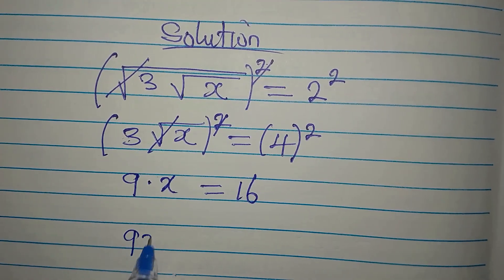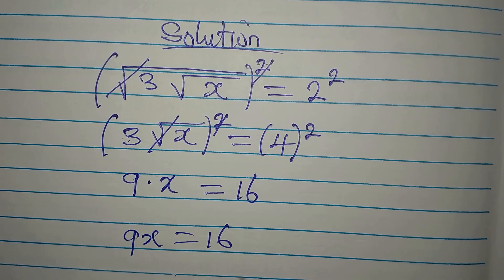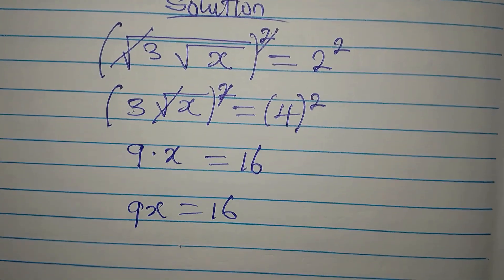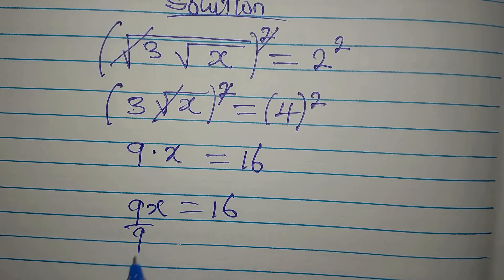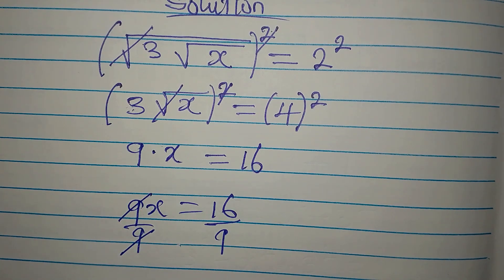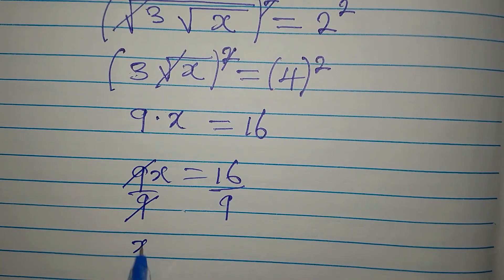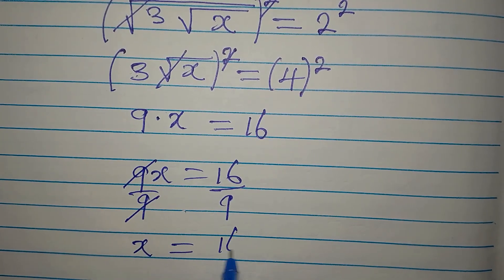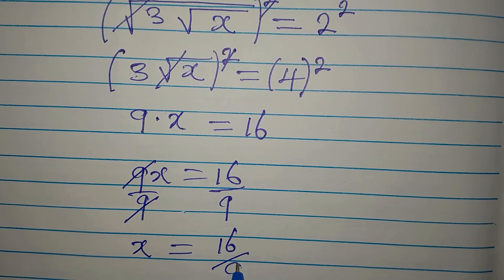9 times x is 9x and that is equal to 16. And then we divide both sides by the coefficient of x and that is 9. So this will go into that. Now, our x is just 16 divided by 9.